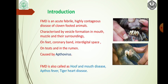FMD is an acute, febrile, highly contagious disease of cloven-hoofed animals, characterized by vesicle formation in the mouth, muzzle and their surroundings, on feet, coronary band, interdigital space, on teats and in the udder, and caused by aphtho fever. FMD is also called hoof and mouth disease, aphtho fever, tiger heart disease, and in Assamese it is called shavokaro.